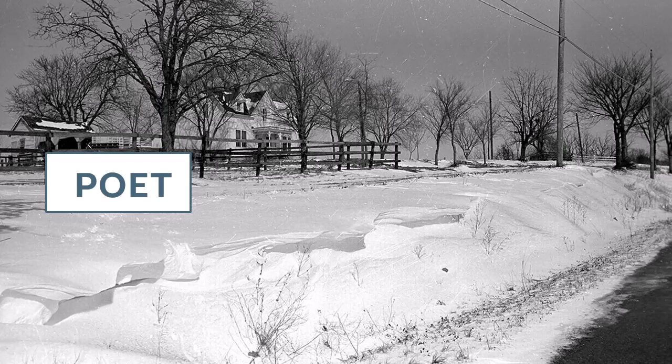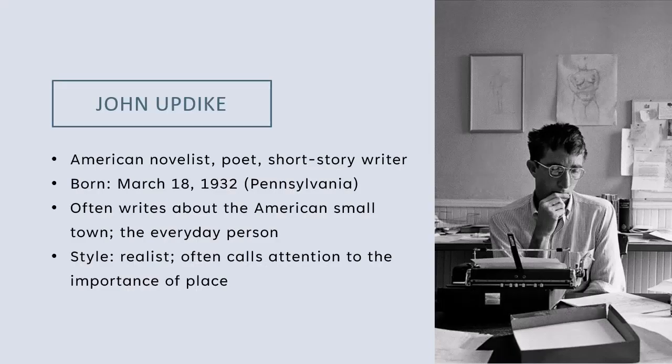First, let's learn a little bit about the poet. John Updike is an American novelist, poet, and short story writer. He was born on March 18, 1932 in Pennsylvania. He often writes about the American small town or the everyday person, and his style is realist. He often calls attention to the importance of place.